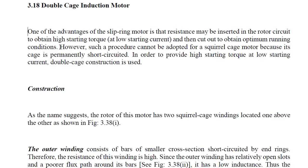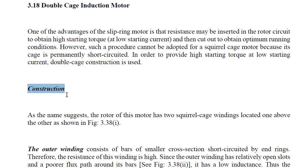However, such a procedure cannot be adapted for the squirrel cage motor because its cage is permanently short circuited. So, in order to provide high starting torque at low starting current, double cage type construction is used. In the squirrel cage induction machine, there is no chance of adding resistance in the rotor circuit because the bars are short circuited at the ends by end rings. That is why we use double cage type construction in the squirrel cage motor.